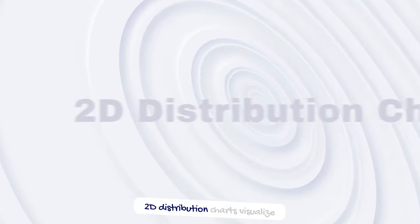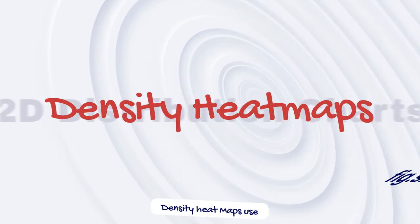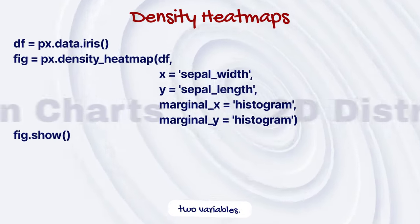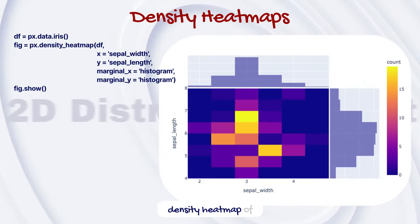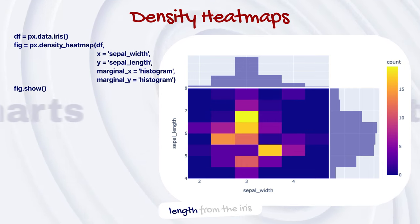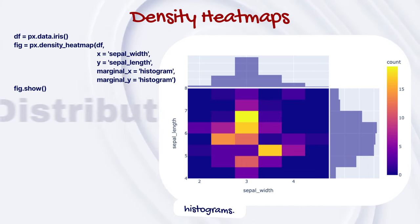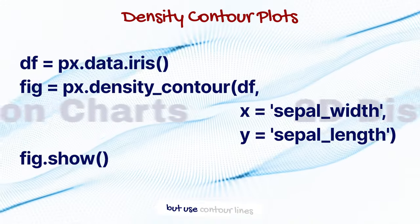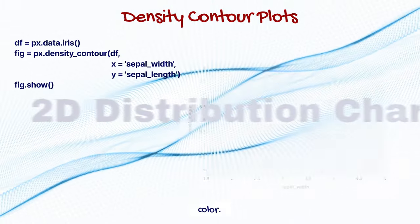2D distribution charts visualize the joint distribution of two variables. Density heat maps use color to show the joint probability density of two variables. This code creates a density heat map of sepal width versus sepal length from the iris dataset with marginal histograms. Density contour plots are similar to heat maps but use contour lines to represent density instead of color.